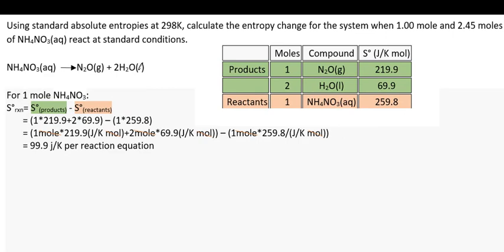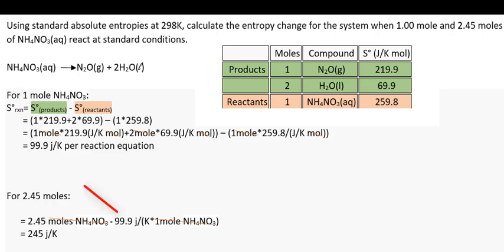The next part of it asks to determine the S reaction for the entropy change for the reaction for 2.45 moles of ammonium nitrate. What we're going to do here is utilize the value we calculated earlier, the 99.9. Now that value is 99.9 joules per kelvin for 1 mole of ammonium nitrate. Well now we're talking about 2.45 moles.